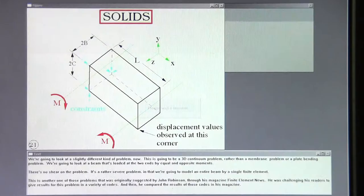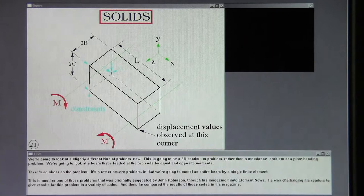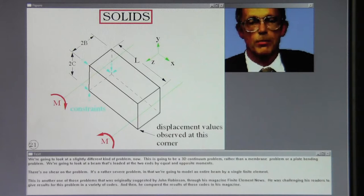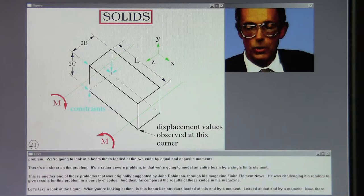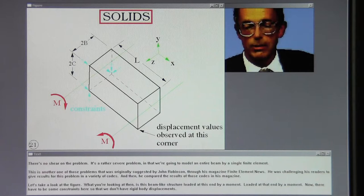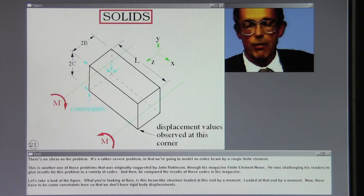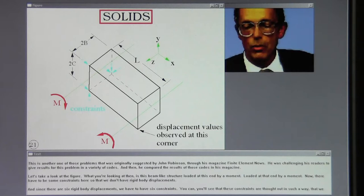We're going to look at a slightly different kind of problem now. This is going to be a 3D continuum problem rather than a membrane problem or a plate bending problem. We're going to look at a beam that's loaded at the two ends by equal and opposite moments. There's no shear on the problem. It's a rather severe problem in that we're going to model an entire beam by a single finite element. This is another one of those problems that was originally suggested by John Robinson through his magazine Finite Element News. He was challenging his readers to give results for this problem in a variety of codes and then he compared the results of those codes in his magazine.